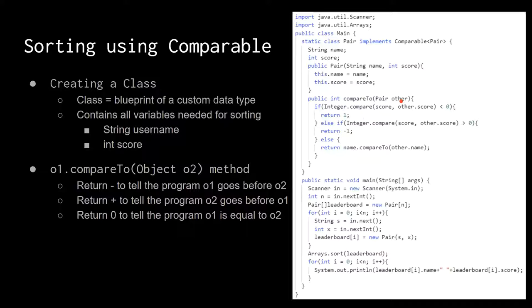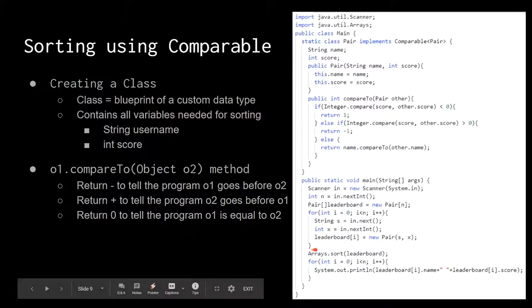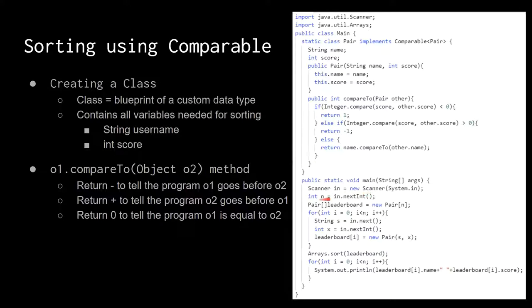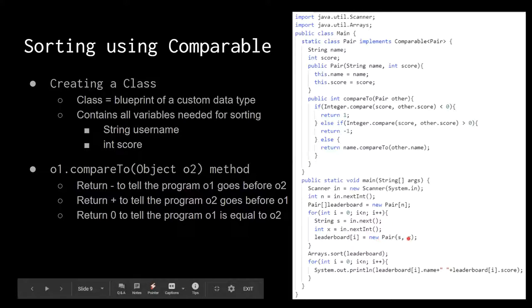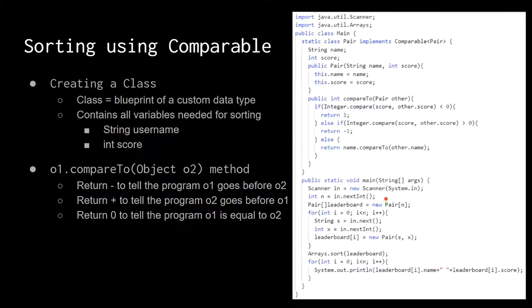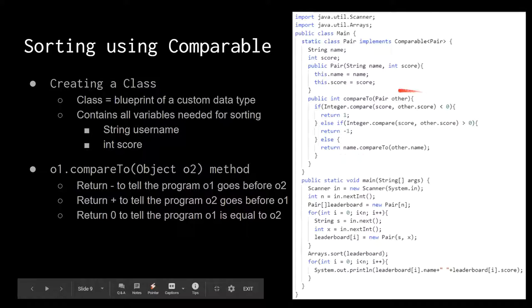Negative one means this pair goes before the other; returning a positive number means it should go after. It's a bit confusing, but this is where you're telling the program how to sort your Pair. You need a scanner to read the number of names in the leaderboard, read each person's name and score, create a new Pair, and assign it to the leaderboard array. Then you sort and print out the name and score.